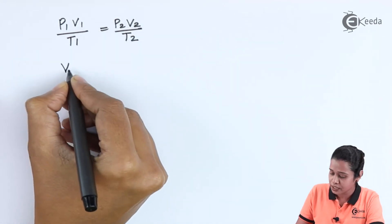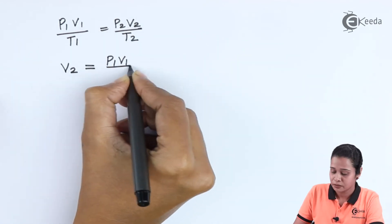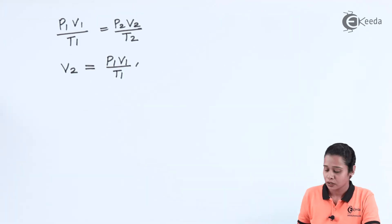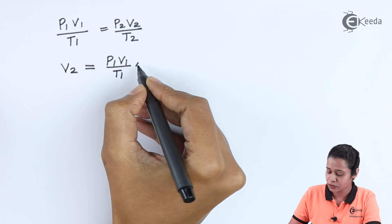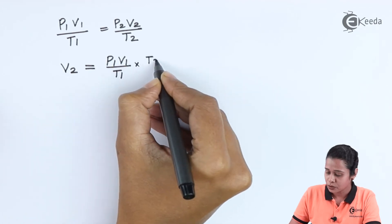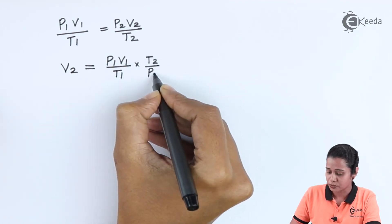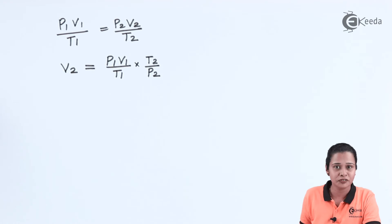So V2 is equal to P1 V1 by T1 into T2 by P2. Let us substitute the values from the given problem.